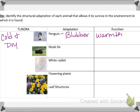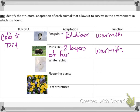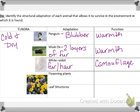Then there's the muskox. The muskox actually has two layers of fur, and its job is to keep it warm. Then we have the white rabbit. It has white fur, and its function is camouflage. Look at how well it blends into the snow — it's hard to see it, so it blends into its environment.